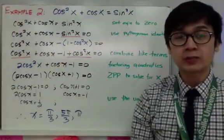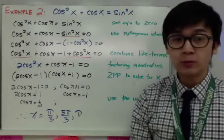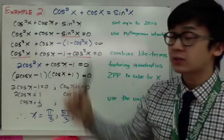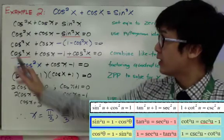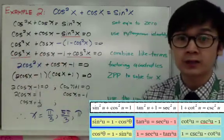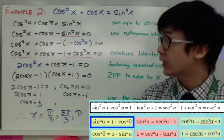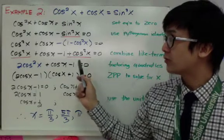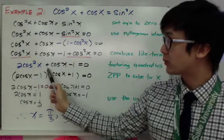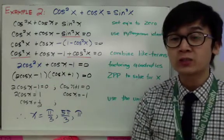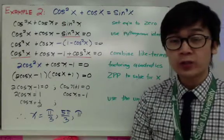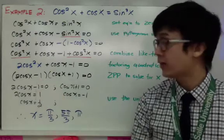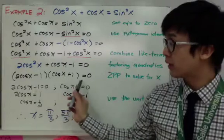For example two, we have cosine squared x plus cosine x minus sine squared x. My first step is to set the equation to zero. Then I replace sine squared x with one minus cosine squared x so that all terms involve cosine, making solving much easier. So I have cosine squared x plus cosine x minus one plus cosine squared x equal to zero. Combining like terms gives two cosine squared x plus cosine x minus one, which is factorable — like two x squared plus x minus one — factoring into two x minus one and x plus one, transformed into the trig equation.